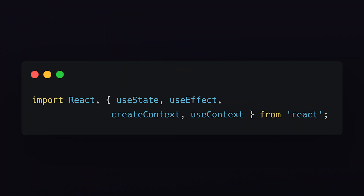Let's take a look at a real-world example using AWS Amplify's Amazon Cognito to pass down the user to all of our components using the React Context API. We will need to import React, useState, useEffect, createContext, and useContext from React.